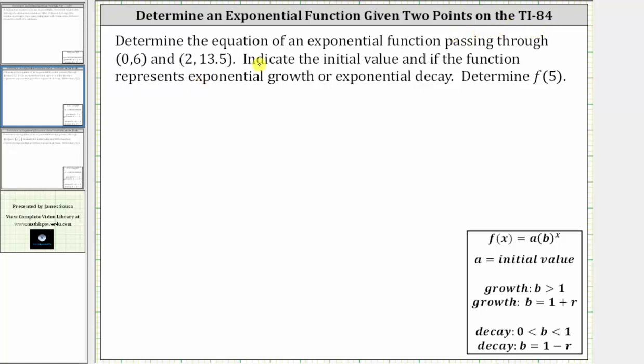We're asked to determine the equation of an exponential function passing through (0,6) and (2,13.5). We're asked to indicate the initial value and if the function represents exponential growth or decay, and then finally determine f(5).